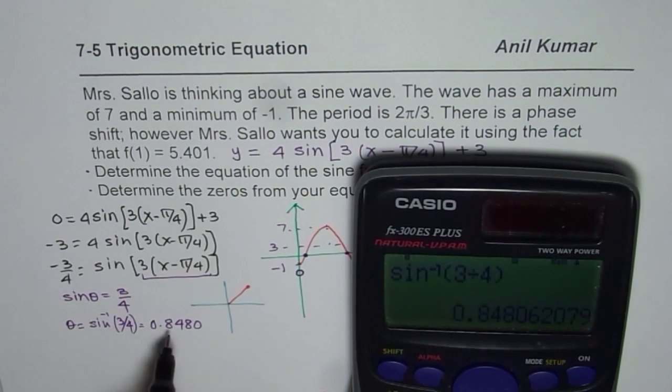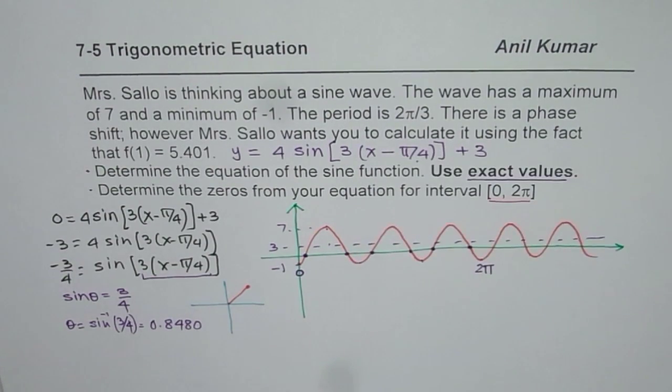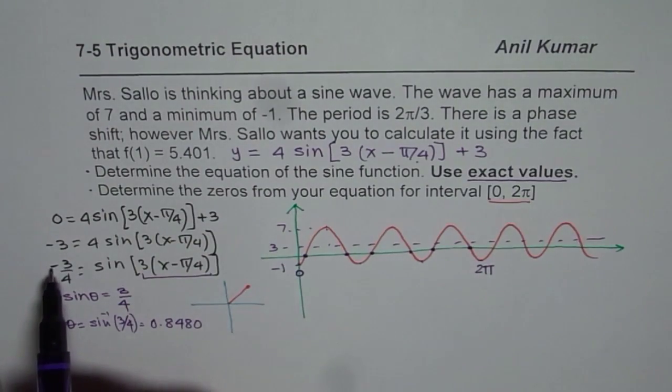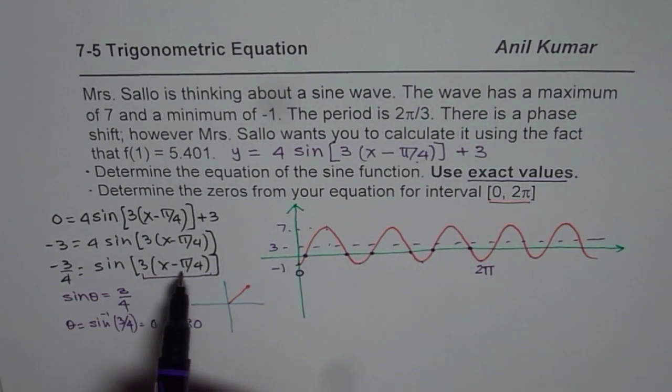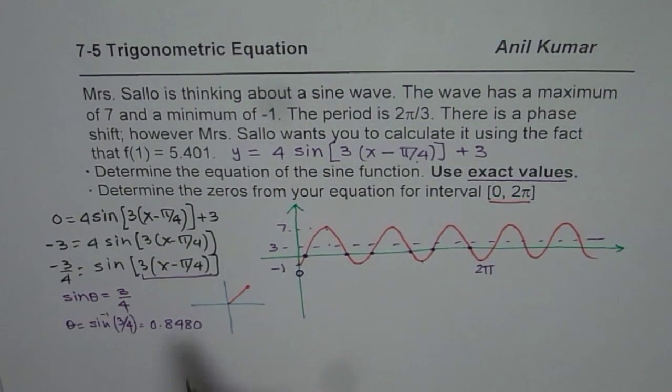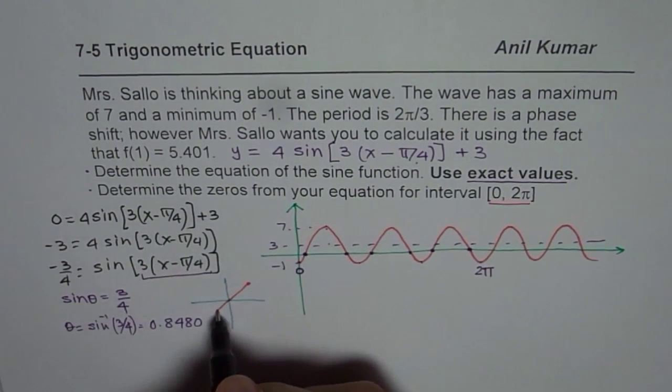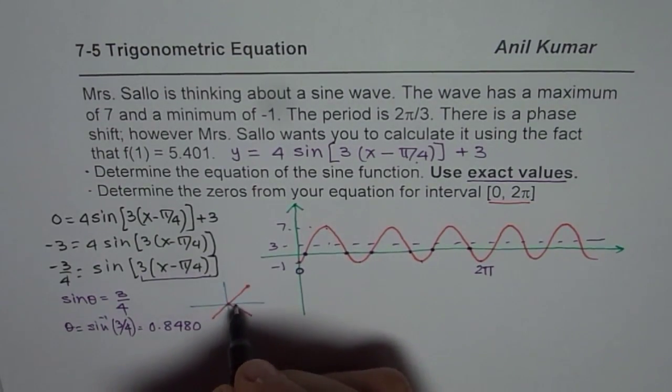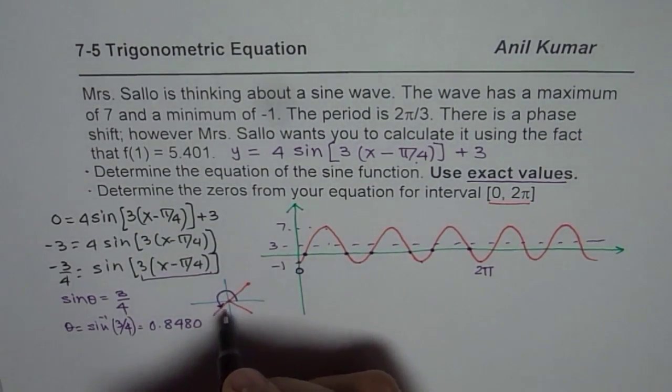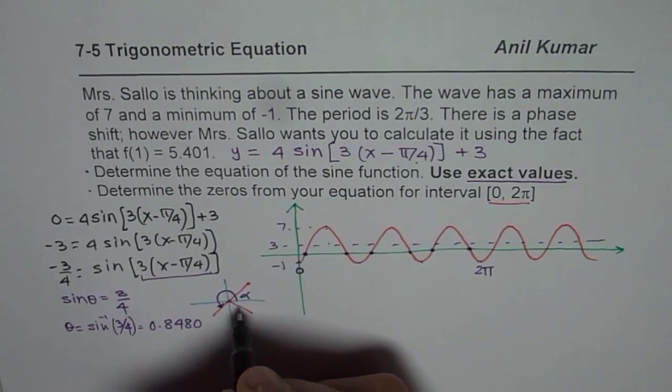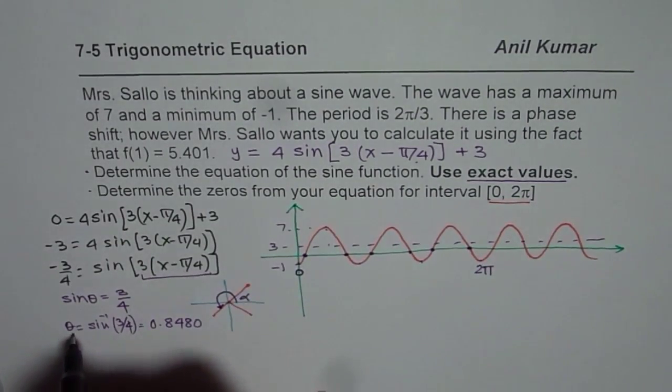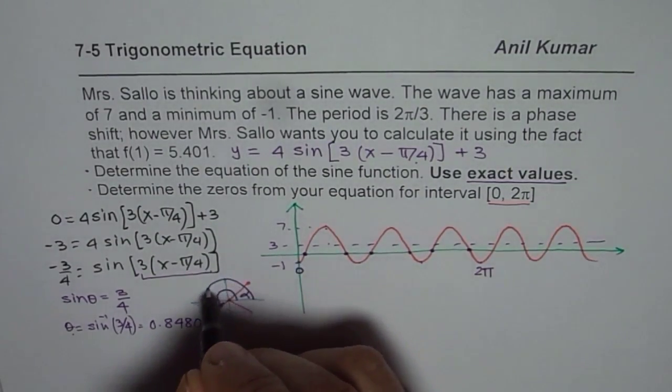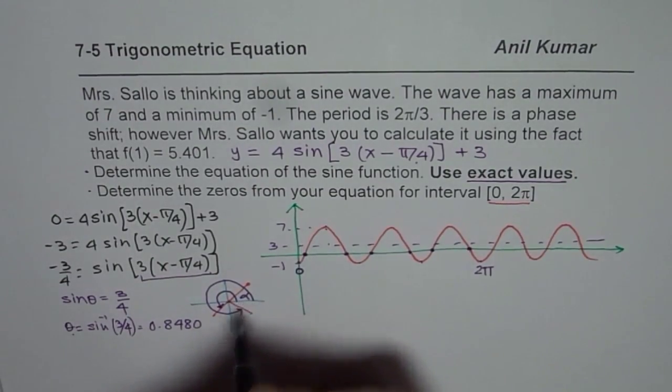So we get theta as this much. But real answer for us is what? We are looking for minus, right? So the angle x which we are looking for is not really in quadrant 1. It is actually either in quadrant 3 or in quadrant 4. So the answers we are looking for is either π plus theta or 2π minus theta.